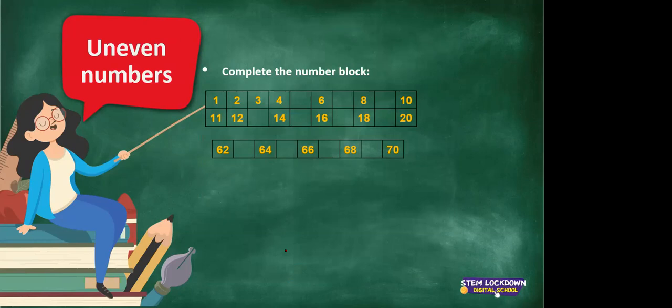Ready? One, two, three, four, five, six, seven, eight, nine, 10, 11, 12, 13, 14, 15, 16, 17, 18, 19, 20. Now we are going to skip and we're going to start at 62. After 62 we get 63, 64, 65, 66, 67, 68, 69.